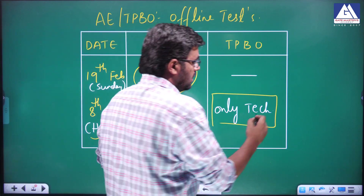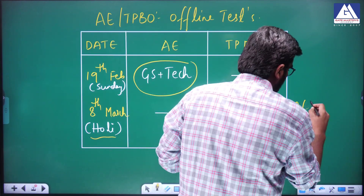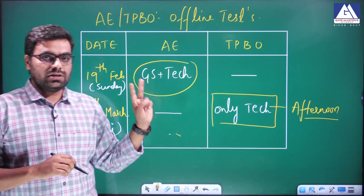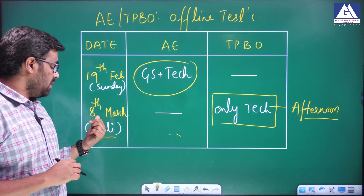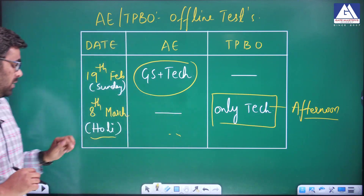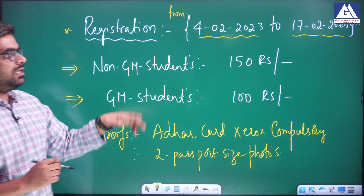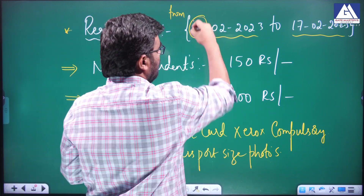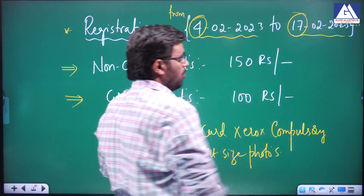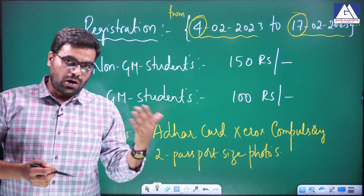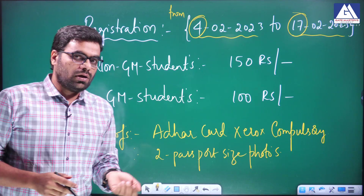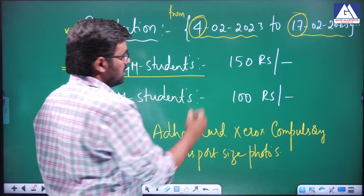So we have only two exams. GS plus technical common — AE 19th Sunday, 19th February. 8th March only technical — afternoon. Registration details: registration from 4th February, 2nd, 3rd, 4th and up to 17th February — registration. Interested students can come to the Gate Master's office — just Google it, you can get the Google map. Non-GM students — online or offline coaching — we are going to charge only 150 rupees registration.